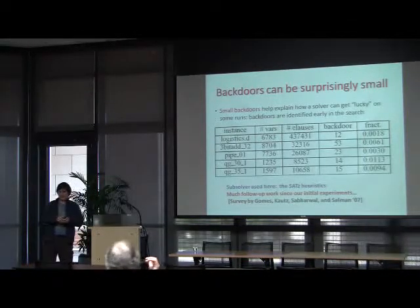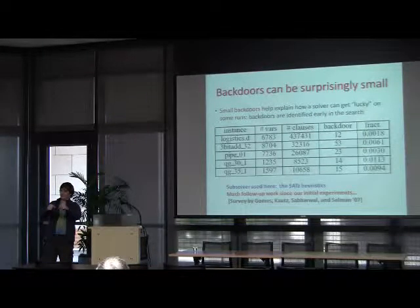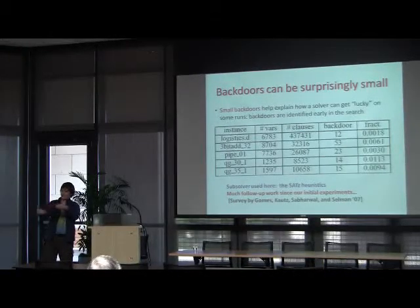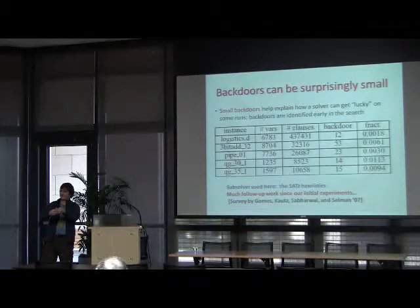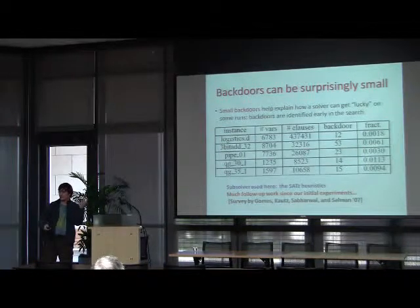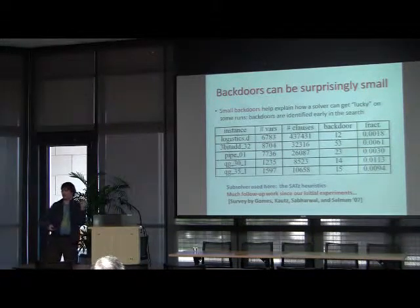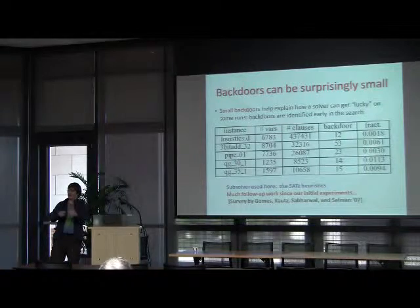We found the backdoor sets by using different heuristics up to a point, then sort of brute-forcing — we tried to cut off the search as early as possible. We couldn't try all 2-to-the-53 assignments; we didn't brute force the whole thing. It could be that there's a smaller backdoor — that's just the largest one we found. It's basically from analyzing the number of times that the SATZ heuristic actually backtracked — the number of times it failed to find a satisfying assignment.